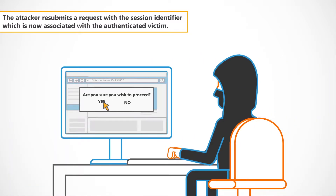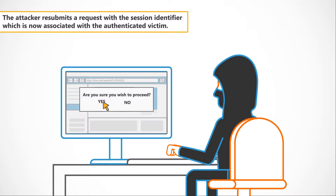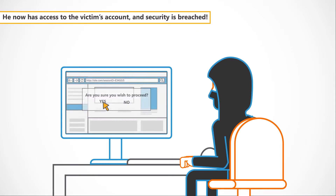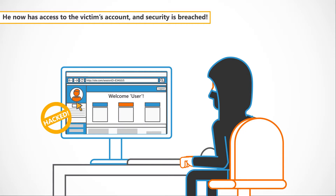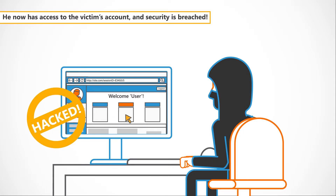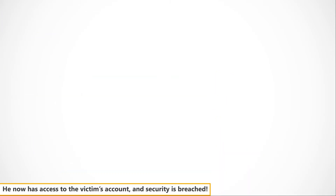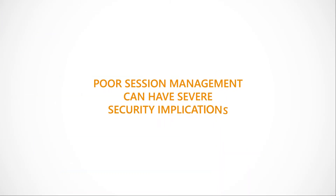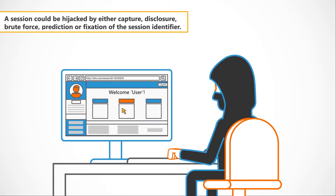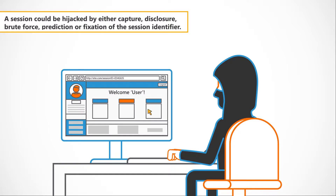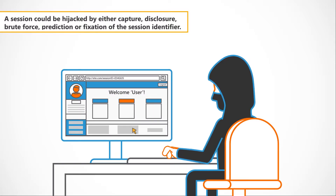The attacker resubmits a request with the session identifier, which is now associated with the authenticated victim. He now has access to the victim's account and security is breached. Poor session management can have severe security implications. A session could be hijacked by either capture, disclosure, brute force, prediction, or fixation of the session identifier.